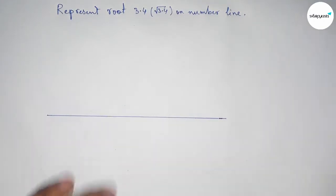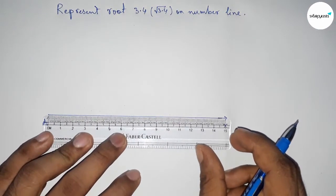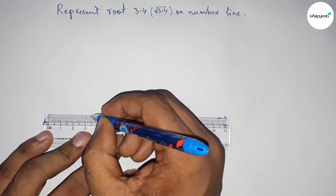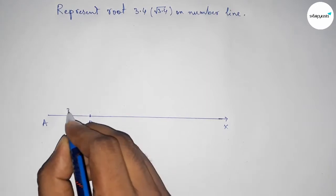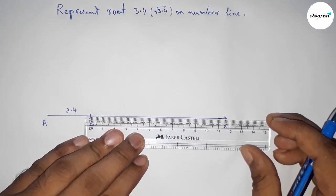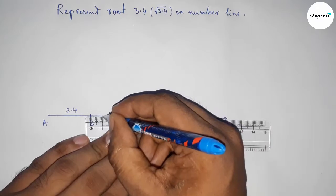First of all, draw a line of any length, and this is the AX line. Next, take a distance of 3.4 centimeters. This is 3.4, and this is point B, so AB equals 3.4 centimeters. Next, mark the numbers on the line from B to X using a scale.